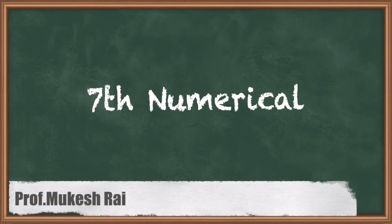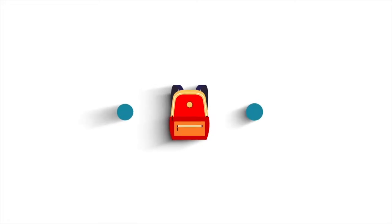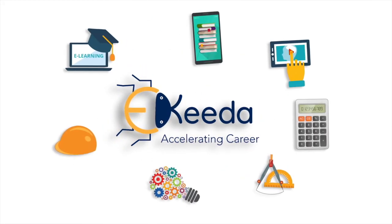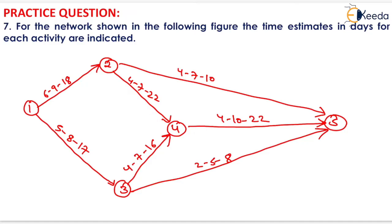Hello students, today we are going to solve the 7th numerical. The question is given as: for the network shown in the following figure, the time estimates in days for each activity are indicated. The network and time estimates are given — that is optimistic, pessimistic, and most likely time — given above each activity. We have to find the critical path as well as the completion time of the project.